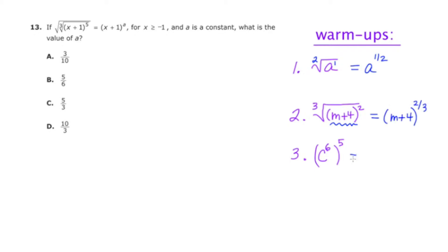And then our third property that I'd like to go over is that when you're raising something to a power to a new power, you multiply the powers together. So this would be c to the 6 times 5, or c to the 30th power.